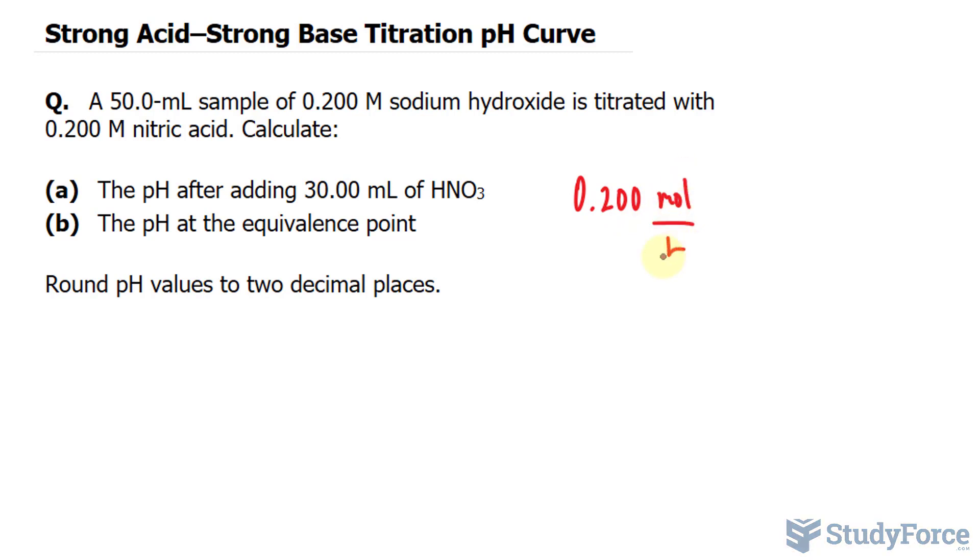So by multiplying this concentration value to the liter version of this number, we end up with the number of moles of sodium hydroxide. So I'll multiply this to 0.0500 liters. The liters unit cancels out and we're left with the amount of moles.